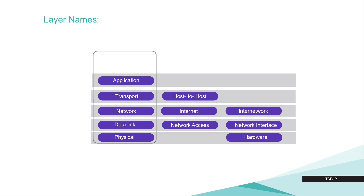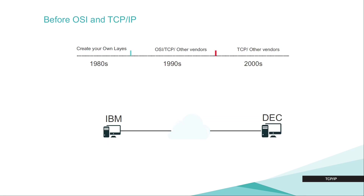Some people call these layers by different names. For example, the transport layer is sometimes called the host-to-host layer. The network layer is called the internet layer or inter-network layer. The data link layer is sometimes called network access or network interface, and the physical layer is sometimes called the hardware layer. Before OSI and TCP/IP, every vendor used their own layers — IBM used their own, totally different from other vendors; same with DEC. Transmitting data between vendors was very complicated. During the 90s, OSI and TCP/IP became standard, and nowadays TCP/IP is the standard for any device.